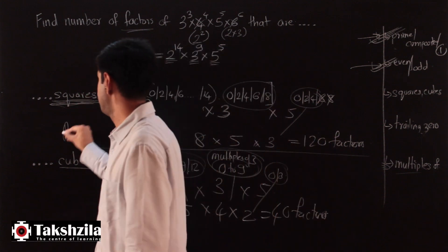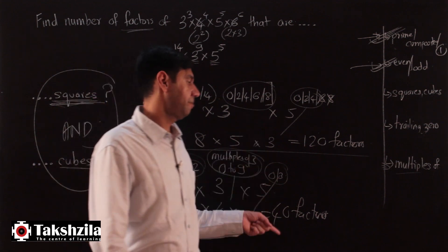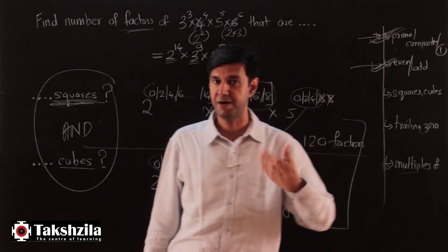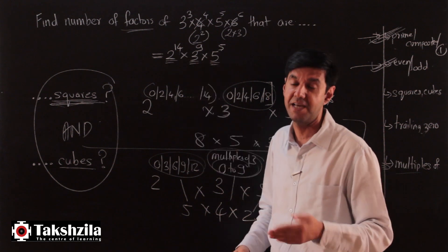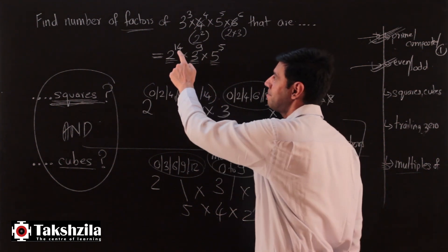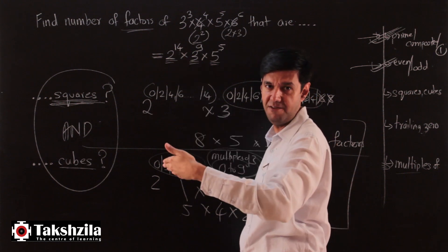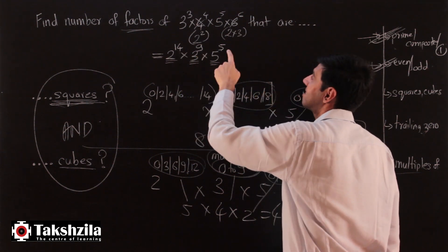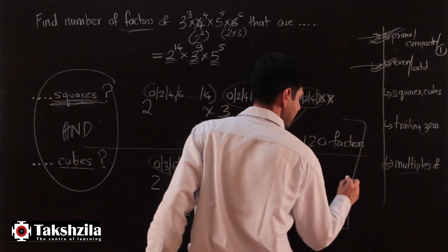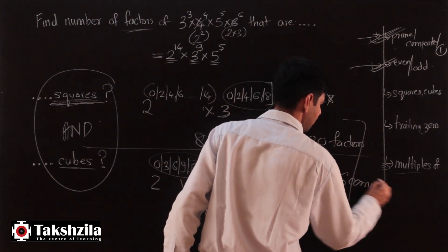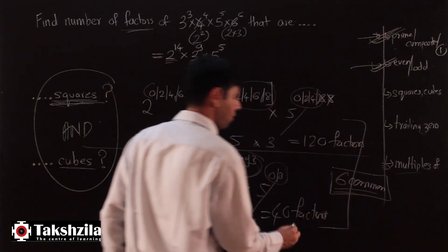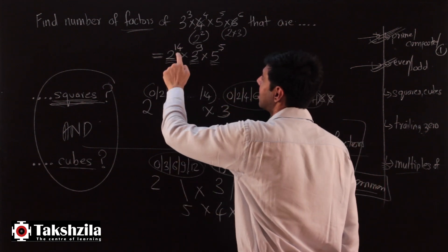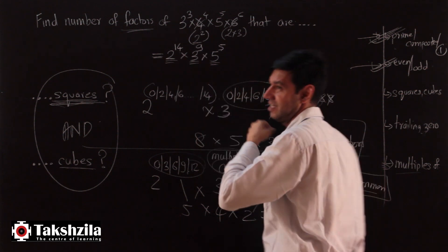Are there factors that are both perfect squares and perfect cubes? Yes — these are common to both sets. To be both, the index must be a multiple of 2 and a multiple of 3, which means a multiple of 6. Multiples of 6 from 0 to 14 are 0, 6, 12 — that is 3 possibilities. For the second prime, multiples of 6 from 0 to 9: only 0 and 6 — 2 possibilities. For 5: only 0 — 1 possibility. So there are 3 × 2 × 1 = 6 factors that are both perfect squares and perfect cubes.